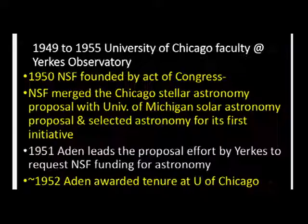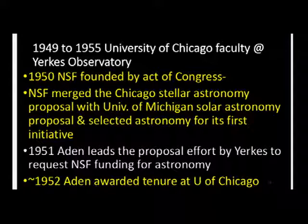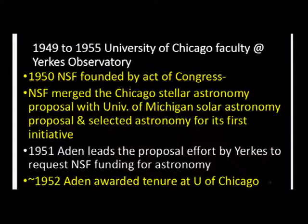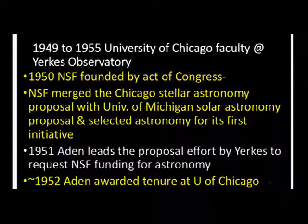He was on the University of Chicago faculty from 1949 to 1955. In 1950, the National Science Foundation was founded by an act of Congress. Aidan had led the writing of a proposal to the NSF to fund a national observatory. The University of Michigan at the same time had a proposal before NSF for a national solar astronomy observatory. NSF merged the two proposals and selected astronomy for its first initiative — the first big initiative the NSF had after its founding was supporting astronomical research. In about 1952, Aidan was awarded tenure at the University of Chicago.